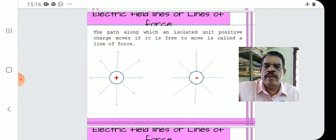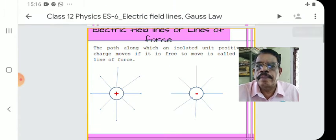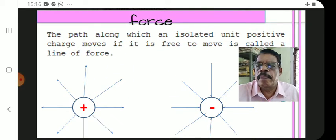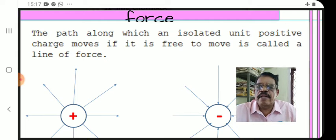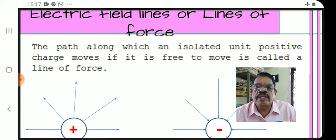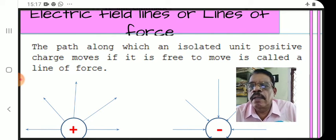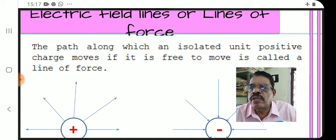An electric field is represented by lines of force, also called electric field lines. They are defined as the path along which an isolated unit positive charge moves if it is free to move. This path is called a line of force.